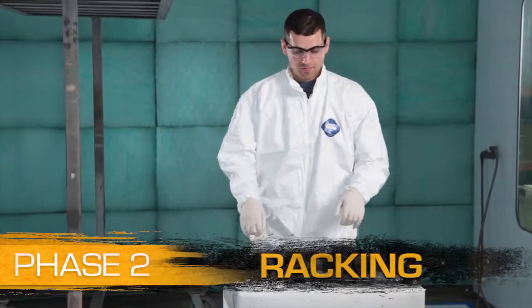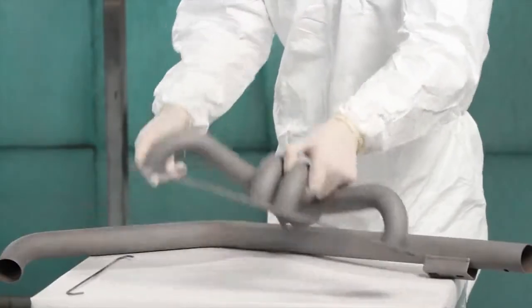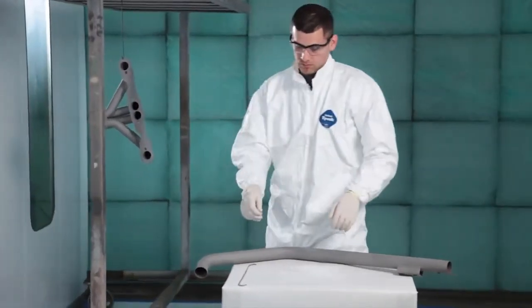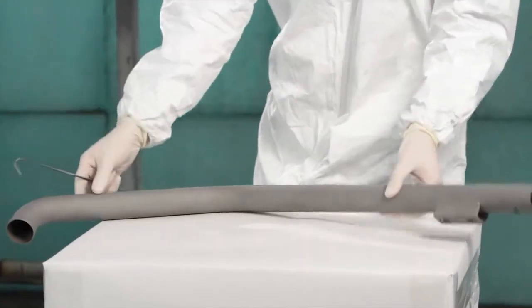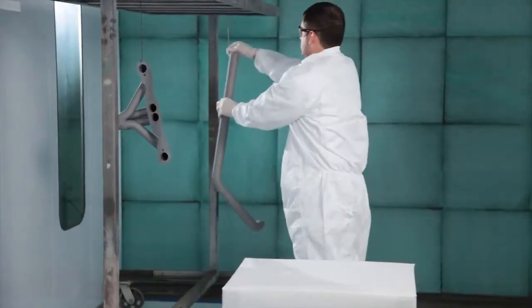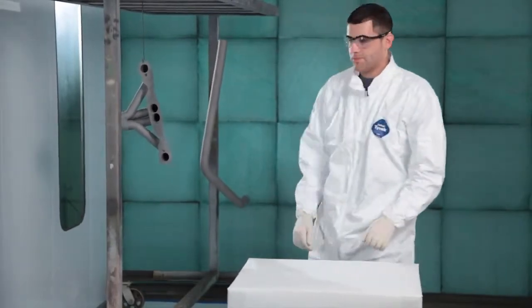Phase 2. Racking. Hang or otherwise fixture parts so that you can access all the surfaces of each part with your HVLP spray gun. Metal hooks of different length are ideal for racking exhaust parts. Make sure to rack parts far enough apart so that they will not bump into each other.